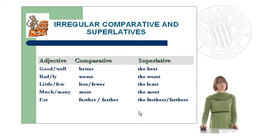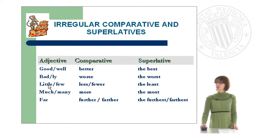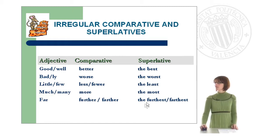Now let's have a look at some irregular comparative and superlative forms. There are adjectives which form the comparative and superlative in a different way — these are called irregular adjectives. The adjective 'good/well' forms the comparative with 'better' and the superlative with 'the best'. 'Bad/badly' form the comparative with 'worse' and the superlative with 'the worst'. 'Little' and 'few' have 'less' and 'fewer' for the comparative and 'the least' and 'the fewest' for the superlative. 'Much' and 'many' have 'more' and 'the most'. And 'far' has two forms: farther/further and the farthest/furthest.